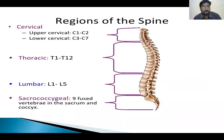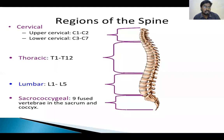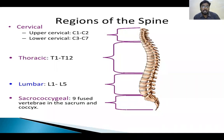Coming to the normal anatomy of the spine, the spine is divided into 4 regions: the cervical region, thoracic region, lumbar region, and the sacrococcygeal region. There are a total of 33 vertebrae in the spine — 7 in the cervical region and 12 in the thoracic region, which are fused with the ribs.